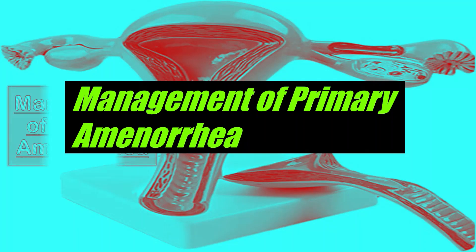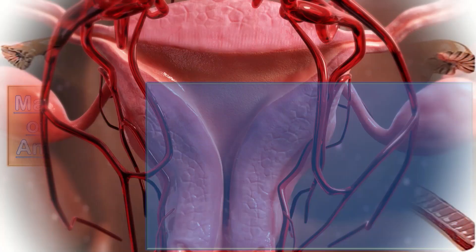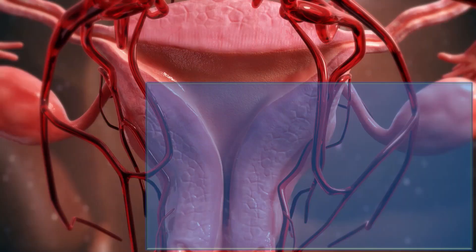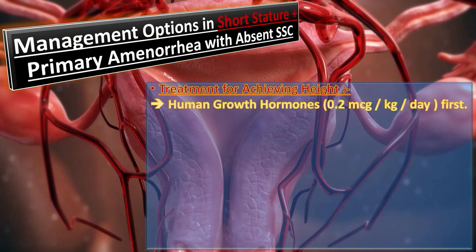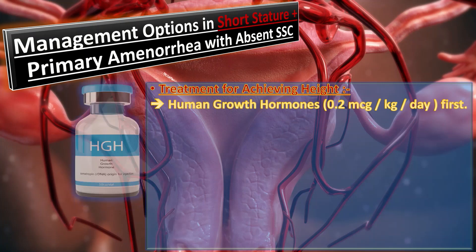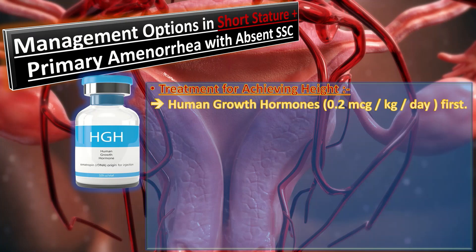Today we discuss the management of primary amenorrhea, which depends upon the cause. For patients with primary amenorrhea, short stature, and absent secondary sexual characteristics: height is achieved with human growth hormone given at 0.2 micrograms per kg per day.